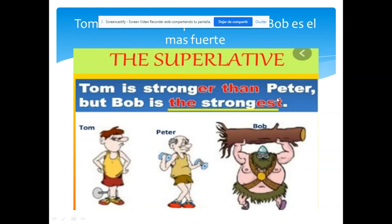Siguiente ejemplo: 'Tom es más fuerte que Bob, pero Bob es el más fuerte de ellos tres.' Tenemos el comparativo: 'Tom is stronger than Bob.' Aquí estoy comparando a Tom con Bob. Pero de los tres, Bob es el más fuerte, entonces usamos el superlativo: 'Bob is the strongest.' Estoy utilizando -est al final para indicar el más fuerte de todos.